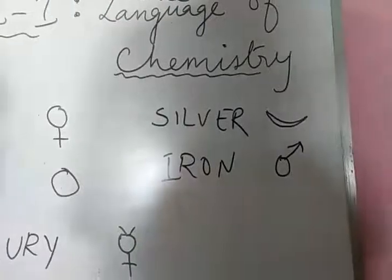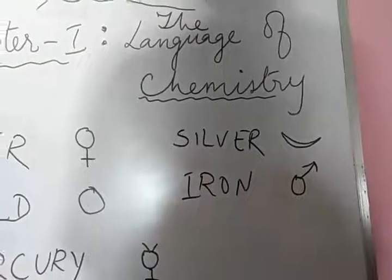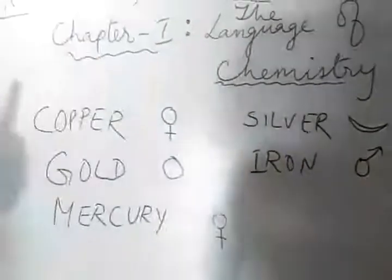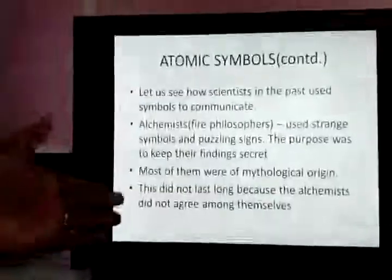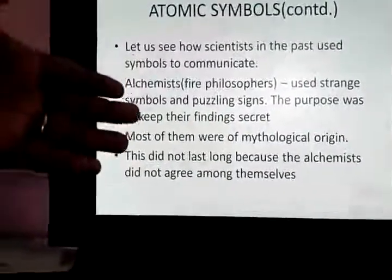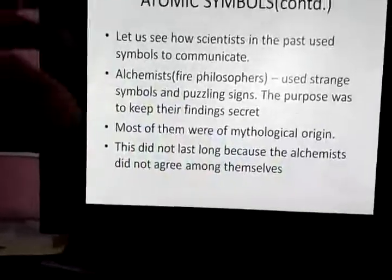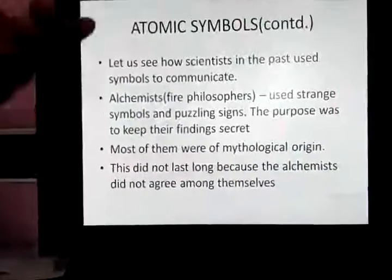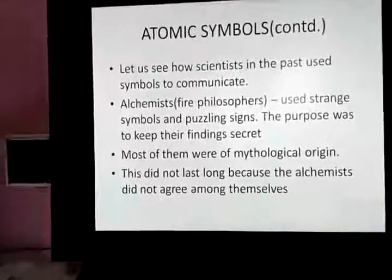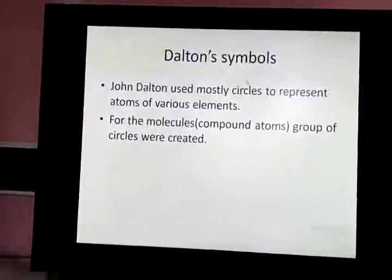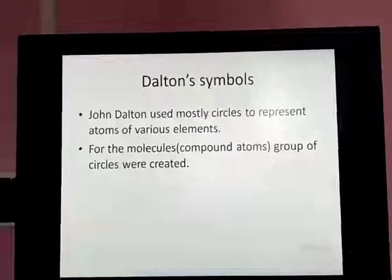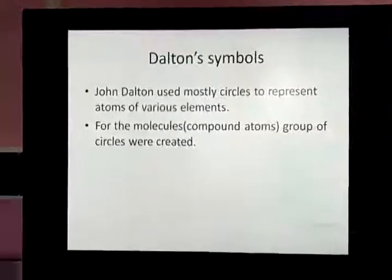Now, what was the problem? Why could they not continue with this? These symbols could not last long because the alchemists did not agree among themselves — some agreed and some did not. So there was a dichotomy among themselves, and therefore these symbols were omitted. Then comes John Dalton.